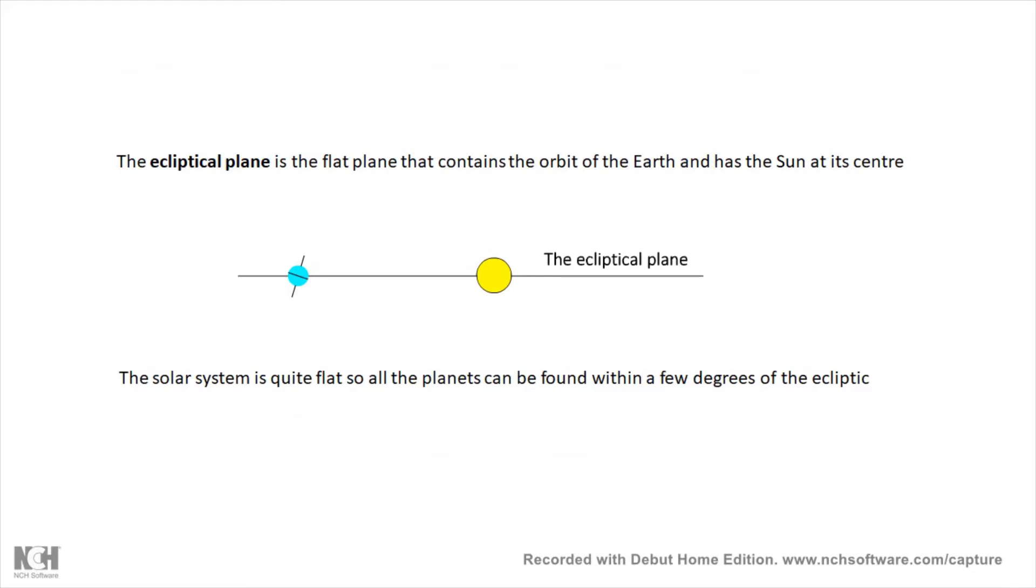The ecliptic plane is the plane of the solar system. Our solar system is pretty flat, and if you imagine a flat disk with the Sun in the middle of the disk and then the Earth is on that disk, then that is the ecliptic plane, and all of the other planets will be pretty close to the ecliptic plane. Some of their orbits may be slightly tilted by about one or two degrees. Mercury's orbit is about six degrees.